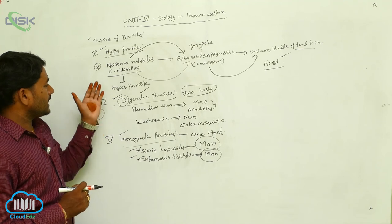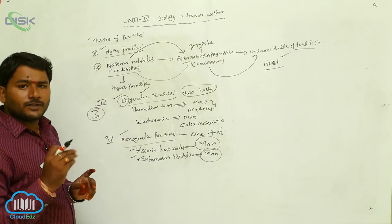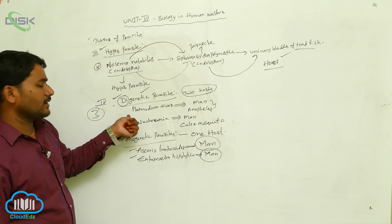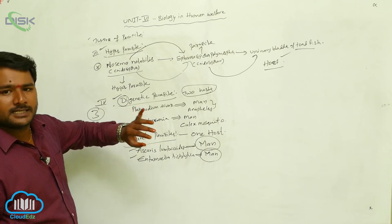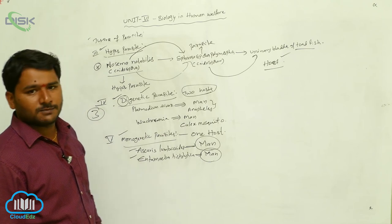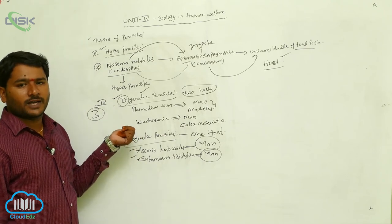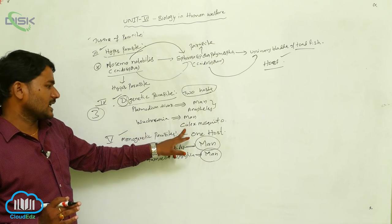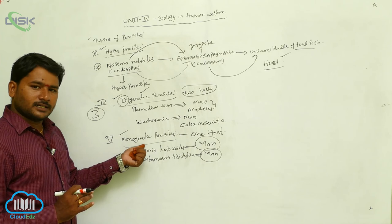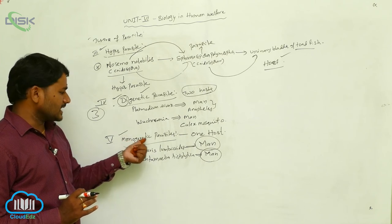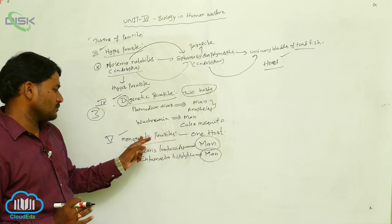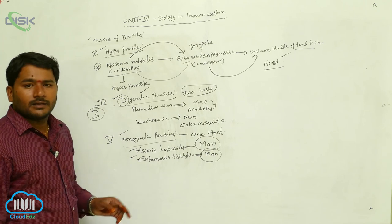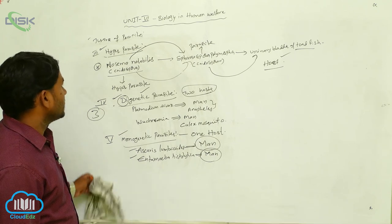There are also two more types: digenetic parasites complete their life cycle in two hosts — Plasmodium vivax, which causes malaria, completes its cycle in man and Anopheles mosquito; Wuchereria bancrofti, which causes filariasis, completes its cycle in man and Culex mosquito. Monogenetic parasites complete their life cycle in one host — Ascaris lumbricoides and Entamoeba histolytica both complete their life cycles only in man. These are all the types of parasites.